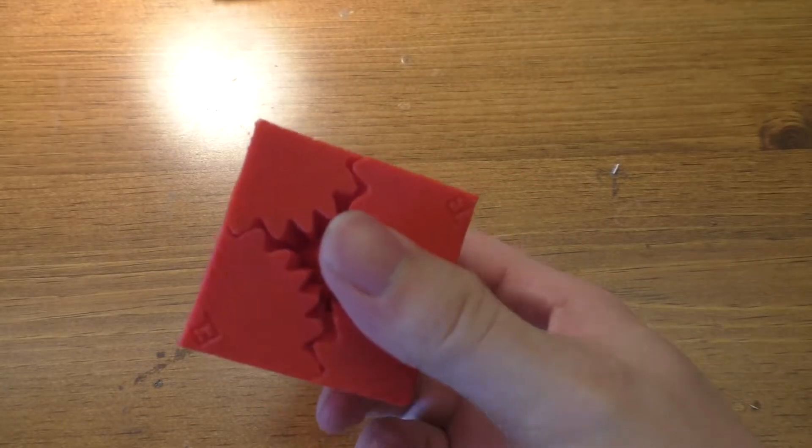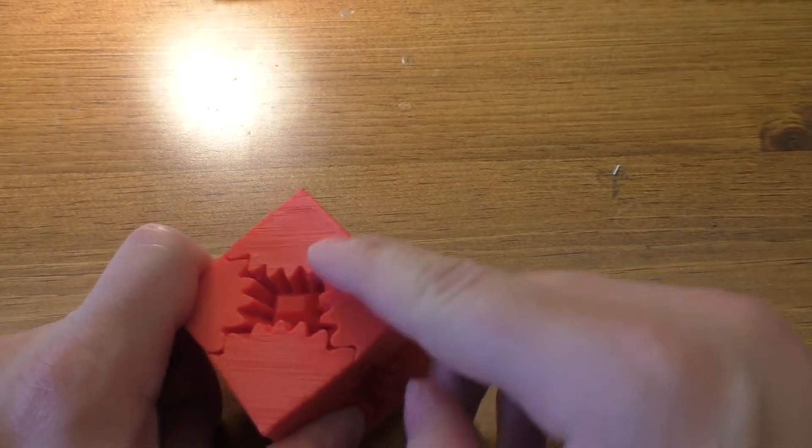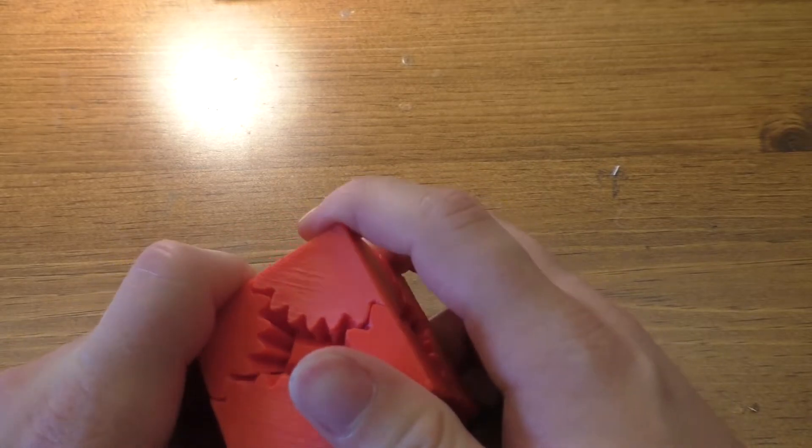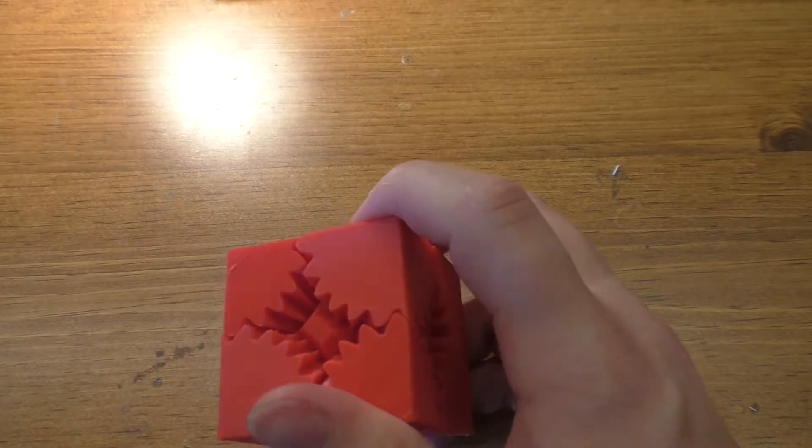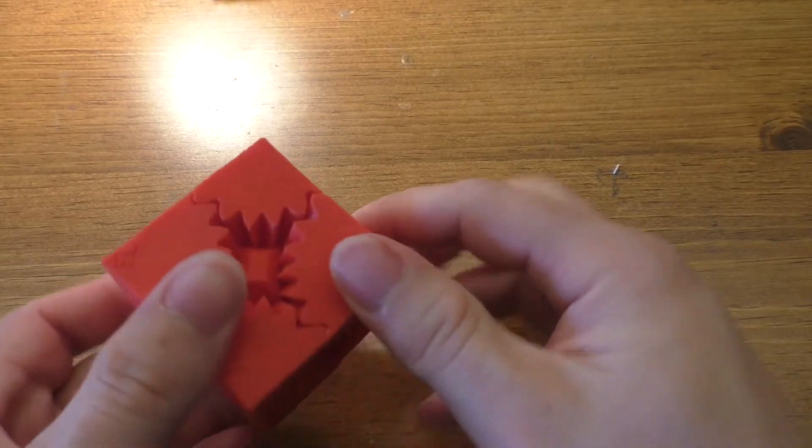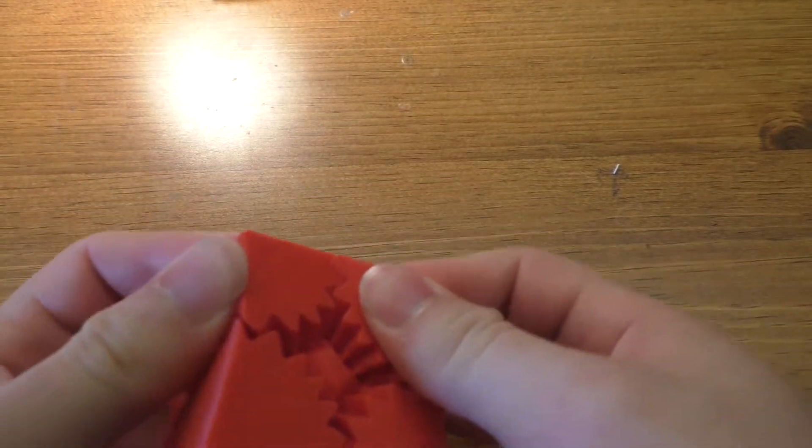So this is the five to six ratio gear cube. There are three of them on the Thingiverse listing, but anyway, this is actually kind of a cool model.